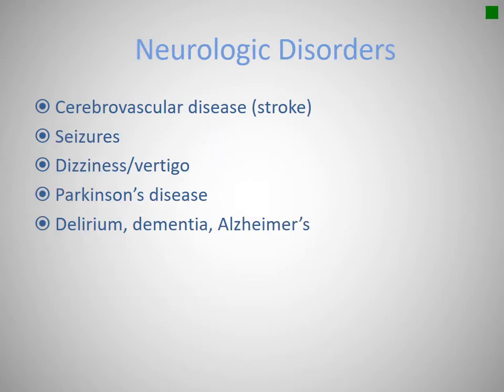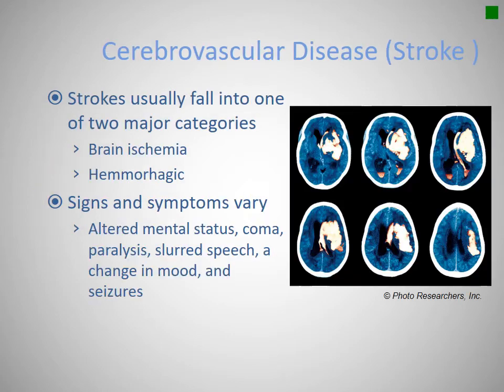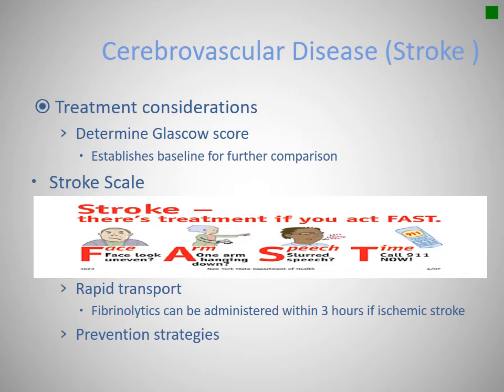Getting into neurological diseases — strokes are very common, along with seizures, dizziness, vertigo, Parkinson's, and dementia. Strokes fall into two categories: ischemic from a blood clot affecting blood flow to an area of the brain, or hemorrhagic from a blood vessel rupturing. Signs and symptoms can vary from altered mental status to coma, slurred speech, vomiting, and unconsciousness. Treatment is mainly rapid transport to a stroke center — around here, that's WVU.